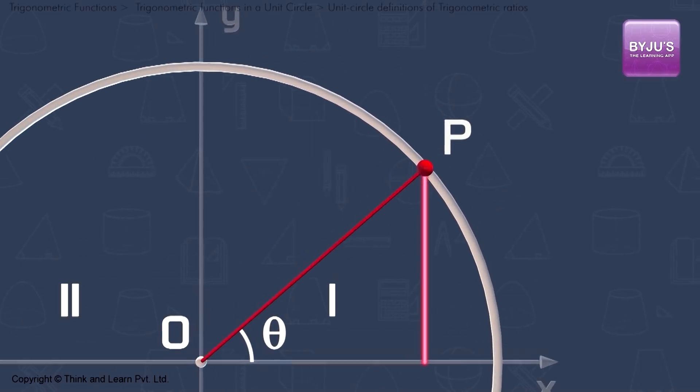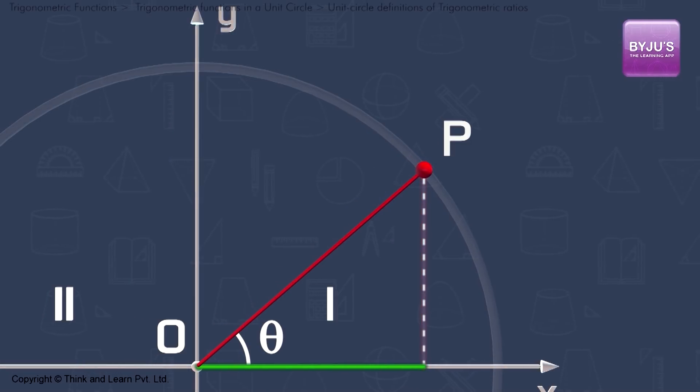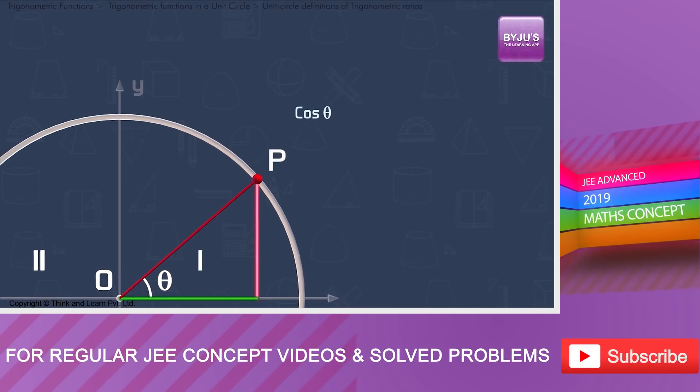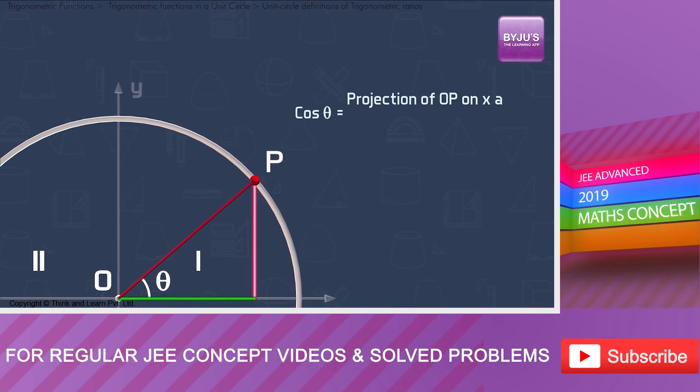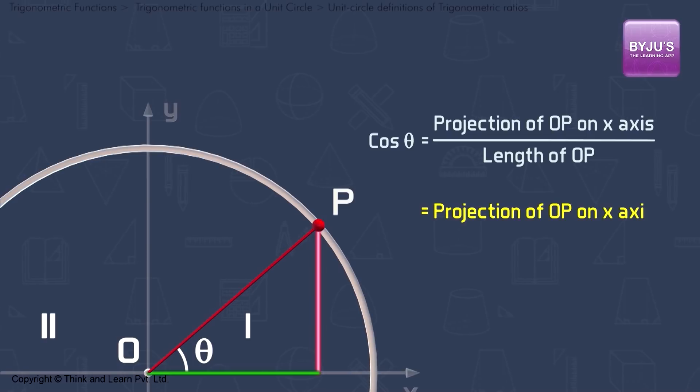Now in the same triangle, we know that cos θ is nothing but adjacent by hypotenuse. The length of the adjacent side is same as the length of the projection of OP on x-axis. Hence we take the following definition for cosine: cos θ is nothing but projection of OP on x-axis by OP, that is projection of OP on x-axis since the value of OP is 1.